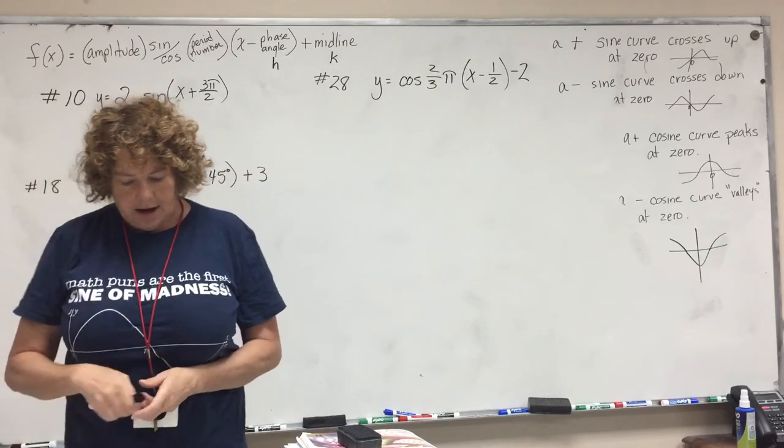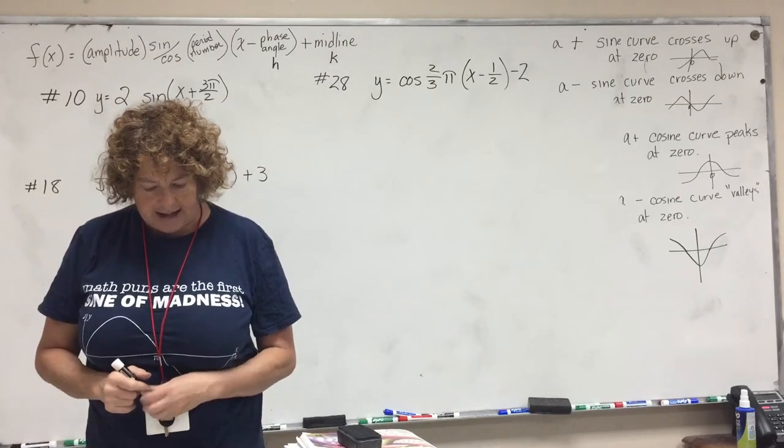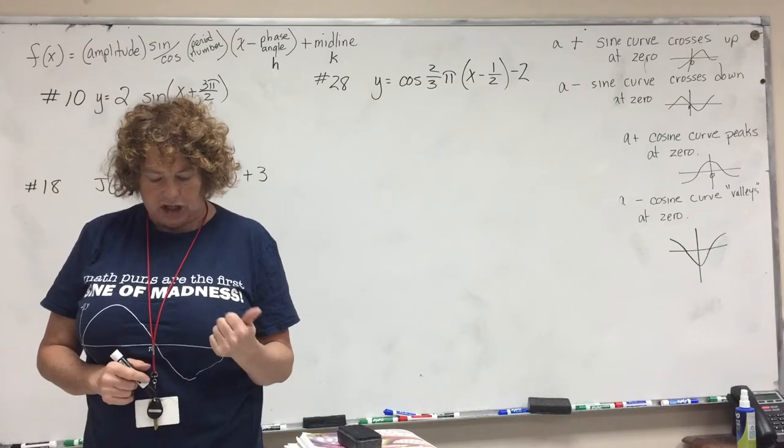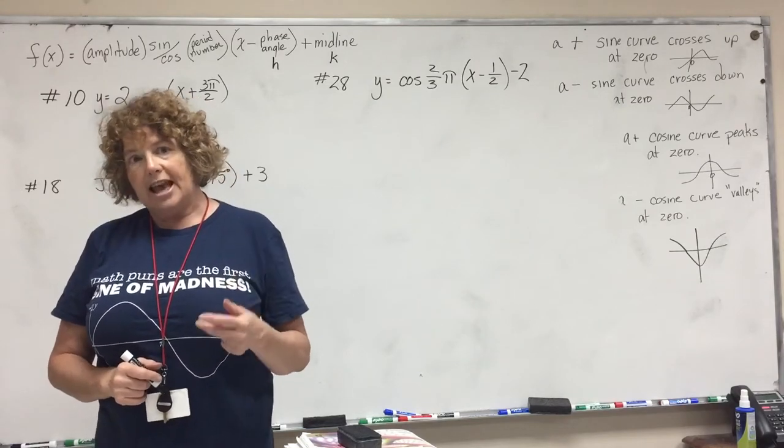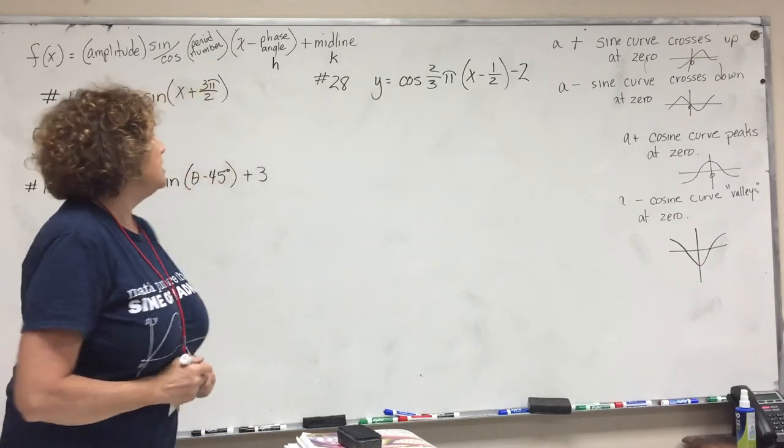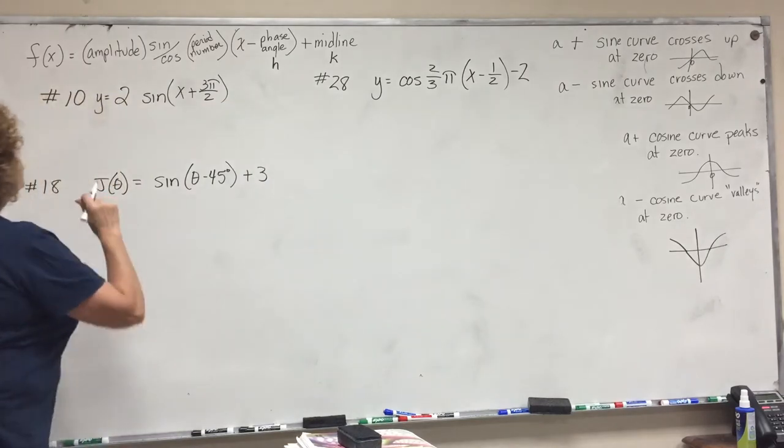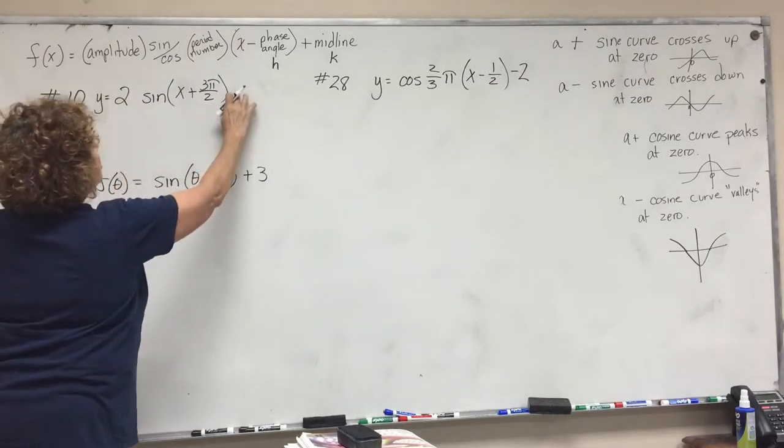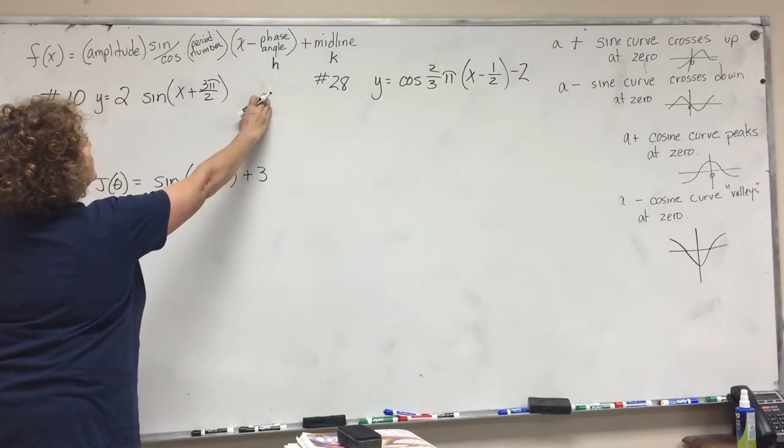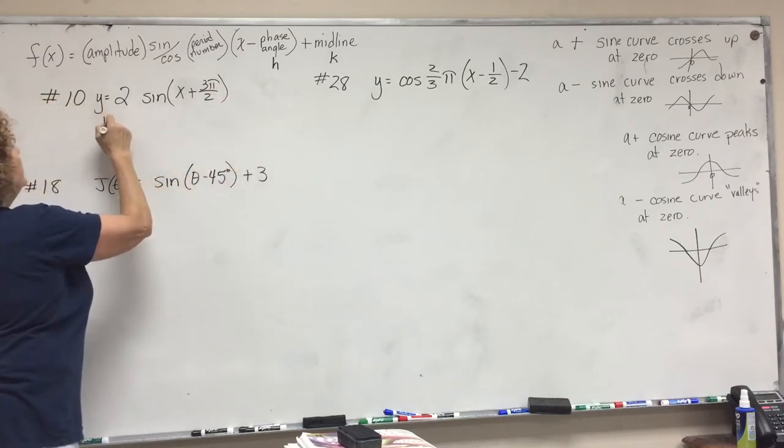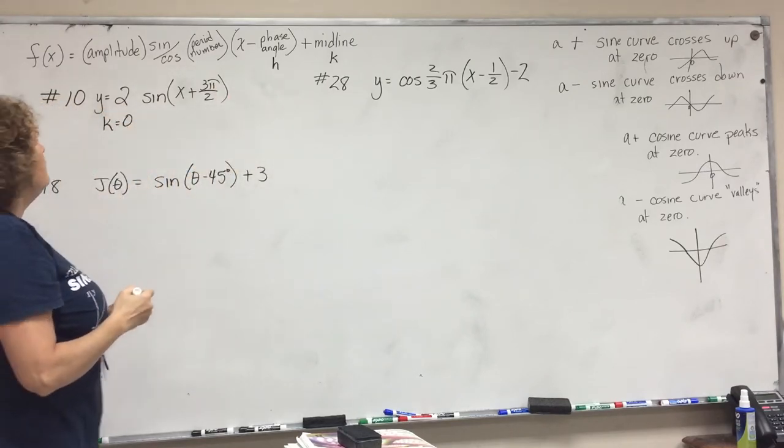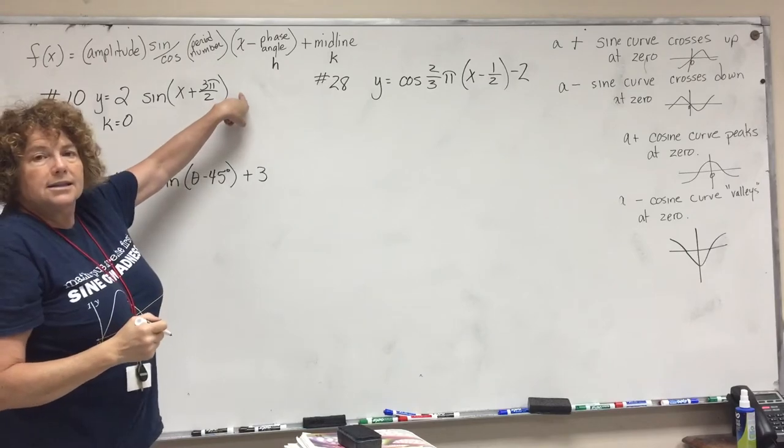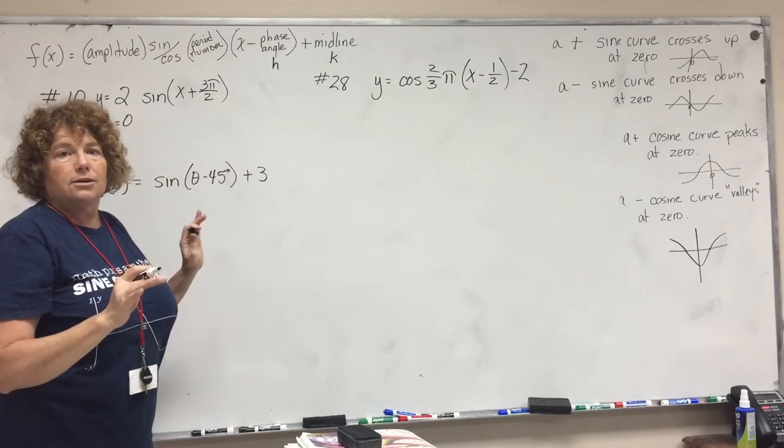Number 10 asks you to find the phase shift which is H and the vertical shift which is K. Doesn't ask you to graph it. So let's take a look. First of all, there's no plus K, so that means our K is still at zero. If there's no plus or minus then it's still at zero, so there is no shift up or down.